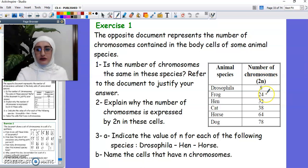Is the number of chromosomes the same in these species? Referring to the document, we notice that in Drosophila it's 8, and in Frog it's 24, in Hen it's 32, in Cat 38. So it's different from one species to another. So it's not the same. We give examples. We say no, since the Frog has 24 chromosomes whereas the Hen has 32, while the Horse has 64 chromosomes. Explain why the number of chromosomes is expressed by 2N in these cells. Why do we say 2N? Why do we say 2N equals 8, 2N equals 24, or even 2N equals 46 like in humans? Well, we already said that each chromosome is made up of two copies. One copy that is maternal and one copy that is paternal. So this 2N represents the two copies, meaning that one is maternal and one that is paternal. And it means that the chromosomes are represented in pairs.